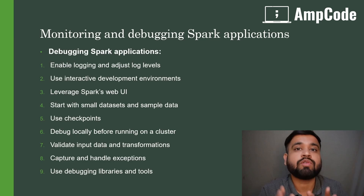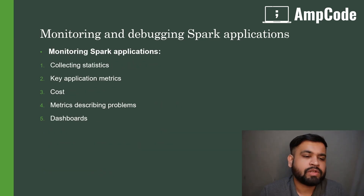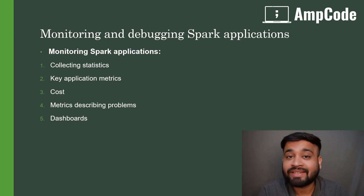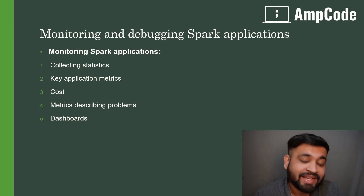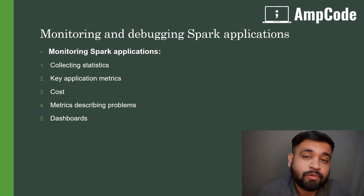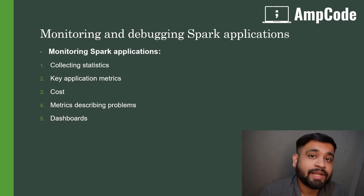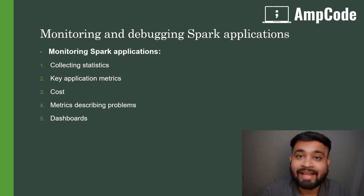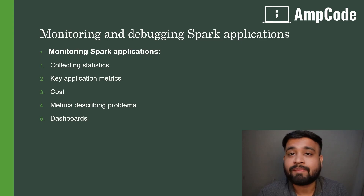Now let's talk about how to monitor your Spark application effectively. The first step is collecting statistics. Collecting all execution information is important for building dashboards so you can get insights into your Spark application's execution history and performance trends. Using the Spark Web UI, you can get the uptime, task time, memory consumption, failure or success rate, historic execution times, and input gigabyte data of the active application.